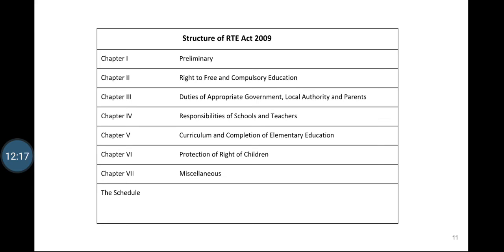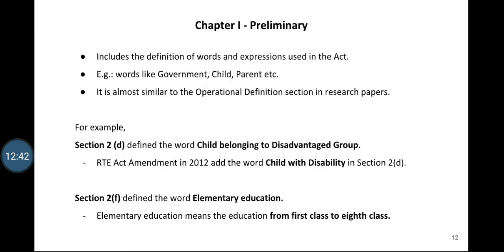This particular section was always a hot discussion topic among experts and even led to amendments in the Act. For example, Section 2D defined the word 'child belonging to disadvantaged group.' Since the definition did not explicitly talk about the child with a disability, many unaided schools denied admission to children suffering from disabilities. That led the government to amend the Act in 2012 and add the particular words 'child with a disability' in Section 2D.